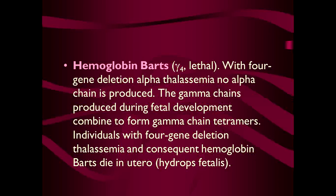Hemoglobin Bart's is a lethal disease — all gamma chains with four gene deletions in alpha-thalassemia; no alpha chain is produced. The gamma chains produced during fetal development combine to form a gamma chain tetramer. Individuals with four gene deletions and consequent hemoglobin Bart's — hydrops fetalis — die in utero.